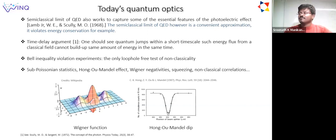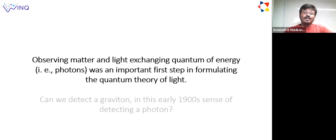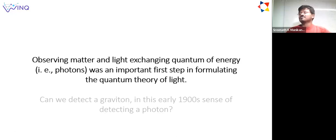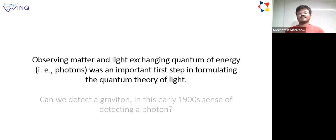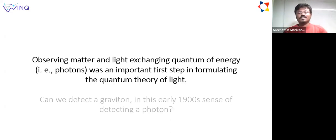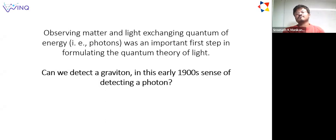What is most important in terms of the photoelectric effect or what happened in the 1900s is that these people were working with the theories known to them at that point of time. The resources they used to make this leap in understanding—basically suggesting that light consists of discrete packets of energy and that matter and light exchange energy in this discrete way—was a major breakthrough in our understanding of the quantum nature of light. This talk is also inspired by the same kind of thought process: the question is whether we can detect a graviton in the early 1900s sense of detecting a photon.